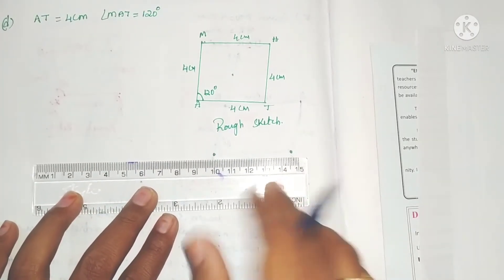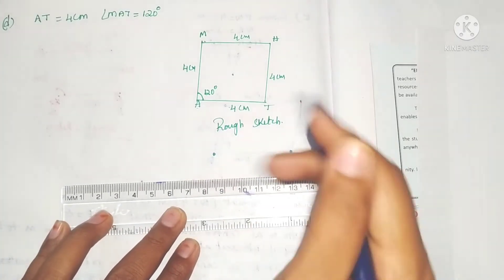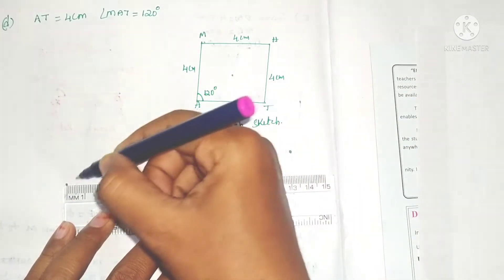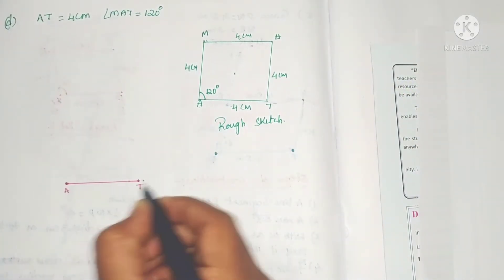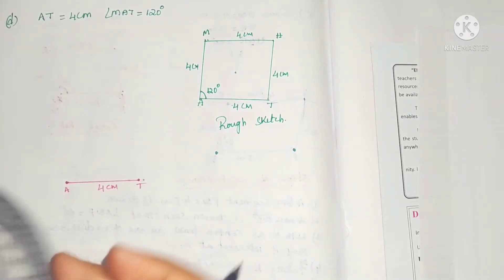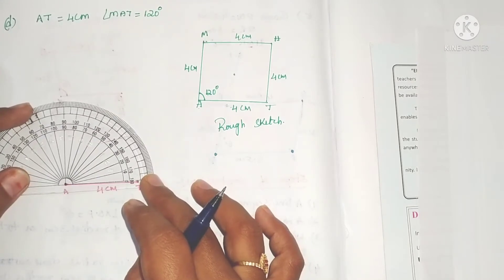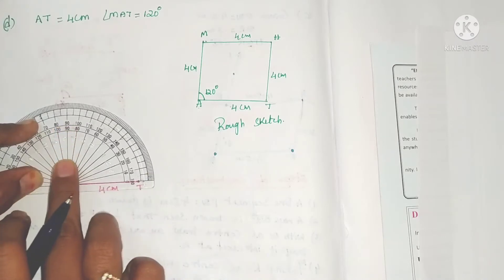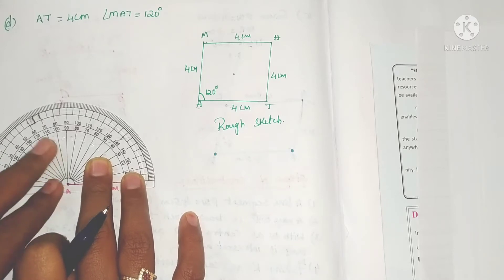Take the scale and draw a line segment of 4 centimeters — AT equals 4 centimeters. Now take the protractor. We need 120 degrees; since 120 is greater than 90, it will be beyond the right angle mark.